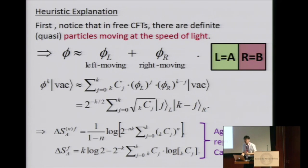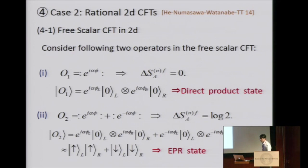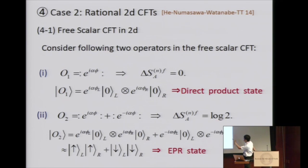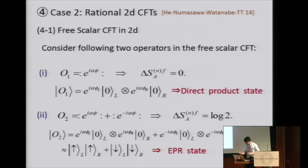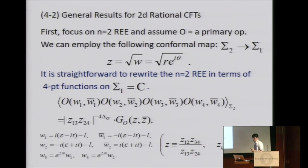Now we promote this to a more interacting but still solvable case — rational 2D conformal field theory, including minimal models and so on. As a trivial example with the free scalar, the exponential operator e^{i alpha phi} has entropy zero since it's a direct product state in terms of left and right movers. But the cosine operator has log 2, because it is actually an EPR state — it has a plus and a minus component in left-moving modes, so it is completely entangled. We want to go to the more non-trivial case of rational conformal field theory.